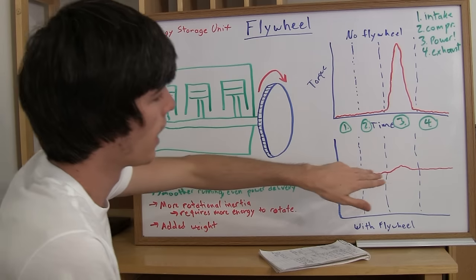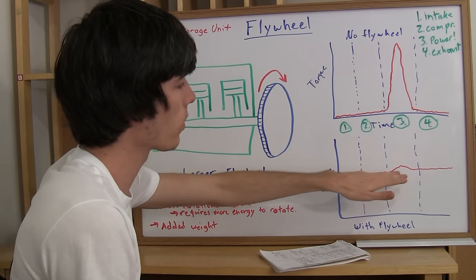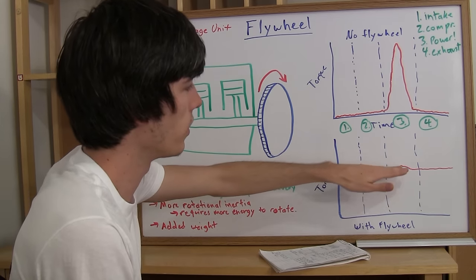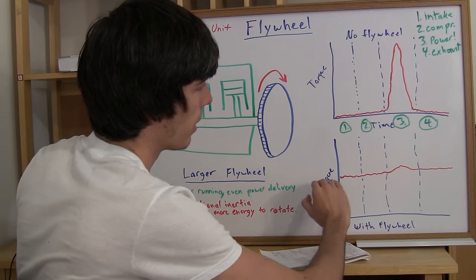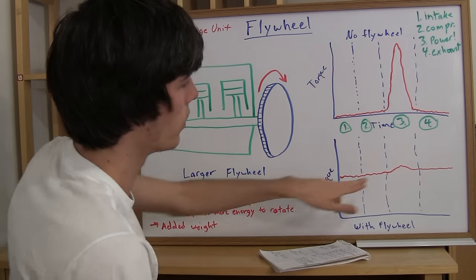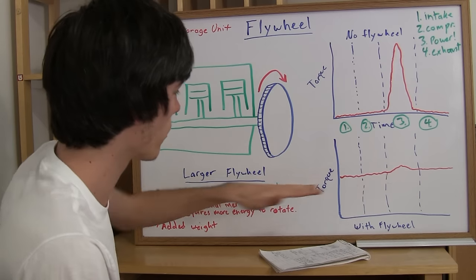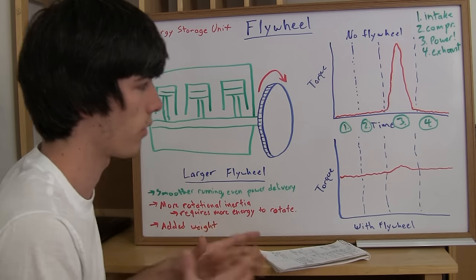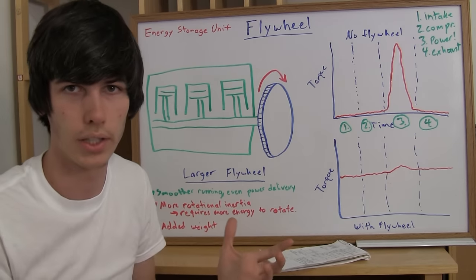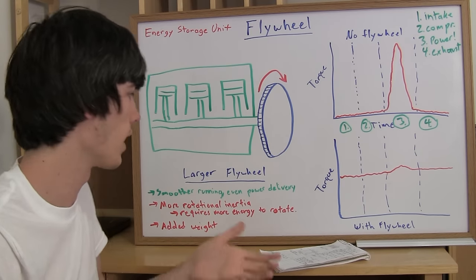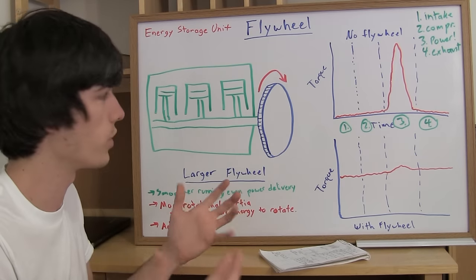So basically, however, if you increase the size of the flywheel, then you can increase the smoothness and basically level this out. So you can see there's still a little bump. You could get rid of that completely if you just had a big enough flywheel. So why wouldn't you just have a really huge flywheel since you'll have a smoother running and an even power delivery engine?